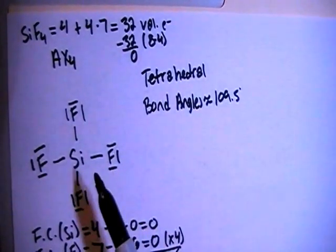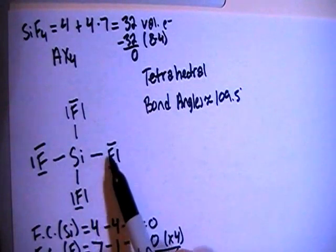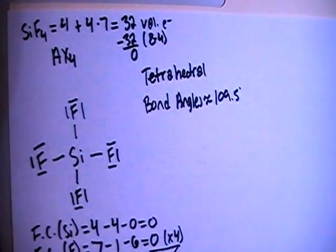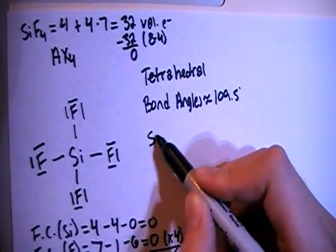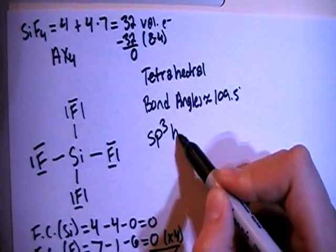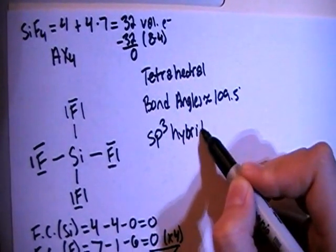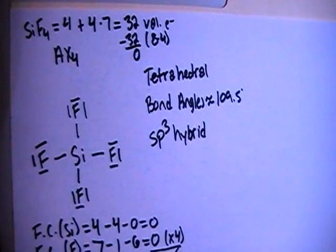In terms of hybridization, looking at the central silicon here, there's 1, 2, 3, 4 bonding sites or electron groups. So with 4 of those, we're going to need 4 hybrid orbitals. So S, P, 3 hybrid, 1S and 3Ps, so that's a total of 4 orbitals.